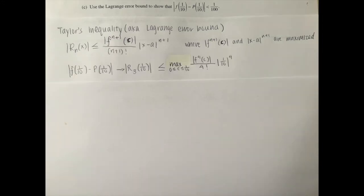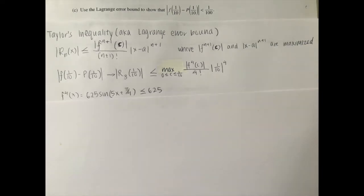The absolute value of f of one-tenth minus p of one-tenth is basically equal to r of one-tenth, which is the remainder of the third degree Taylor polynomial. You want to maximize this inequality on the interval of zero to one-tenth. To find what the fourth derivative of f at c would be when it's maximized, we would have to first find the fourth derivative of f, which would equal 625 times sine of 5x plus pi over 4. As we know, sine can only hit a maximum of one, so that would mean that our max would be 625.